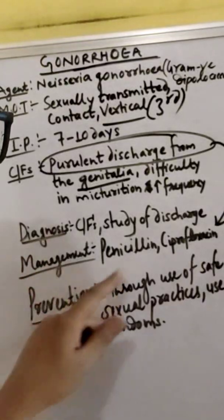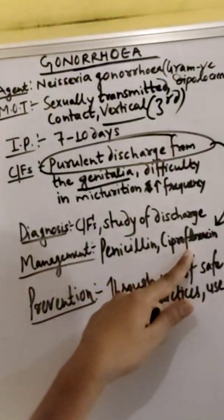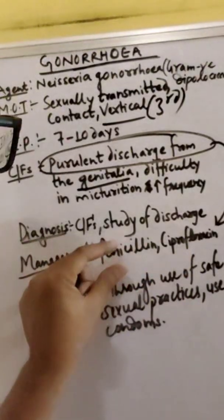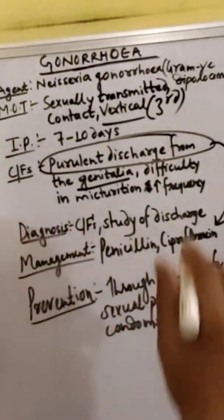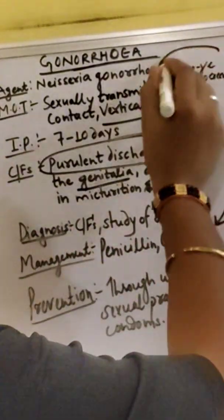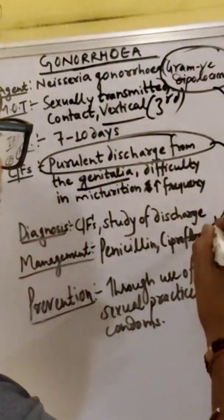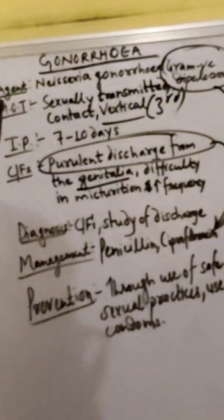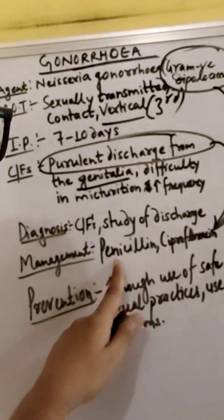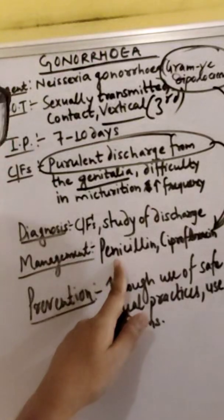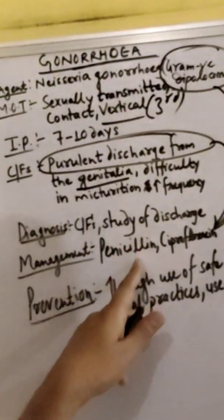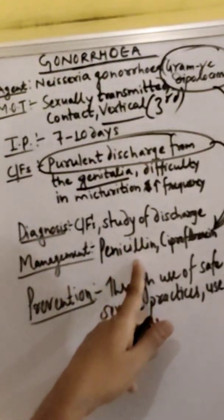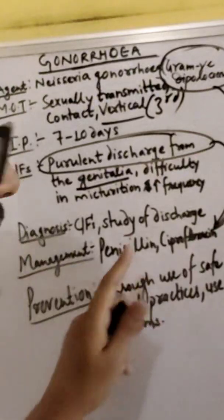For management, penicillin and ciprofloxacin are the two antibiotics given in the case of gonorrhea, because it is a Gram Negative Diplococcus. The doctor will prescribe these to kill the gram-negative diplococcus bacteria.